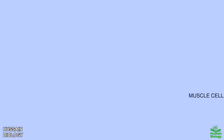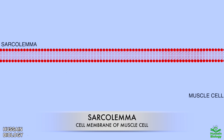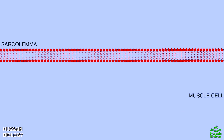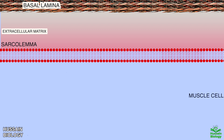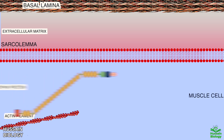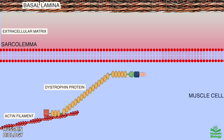In this diagram we can see the sarcolemma, which is basically the cell membrane of the muscle cell. On the outside of the sarcolemma it has the extracellular matrix and basal lamina. On the inside of the cell we have actin filaments to which the dystrophin protein is bound. The dystrophin protein is a rod-shaped protein which extends up to the sarcolemma.